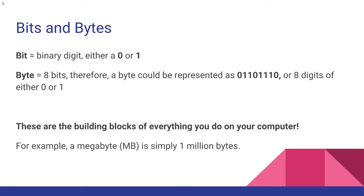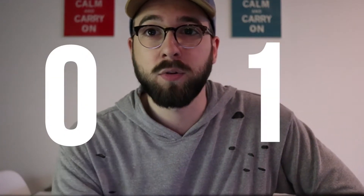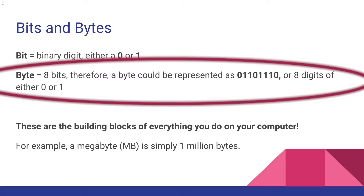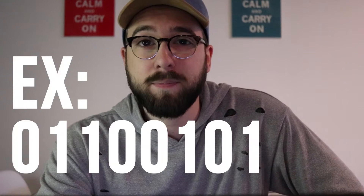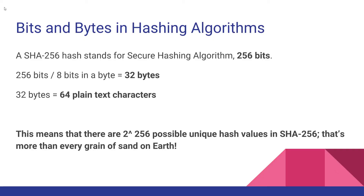To answer that question, we need to jump into bits and bytes as they relate to computers. A bit, short for binary digit, is the smallest unit of data in a computer. A bit is a single binary value, meaning it can be either zero or one — one of two different values. A byte is by standard definition eight bits, so it is a collection of eight different zero-or-one options. SHA-256 means that there are 256 bits in the output. This is the same as 32 bytes, which is 64 plain text characters — so that's how you can always remember that.